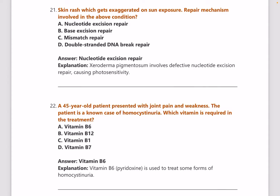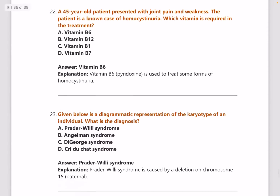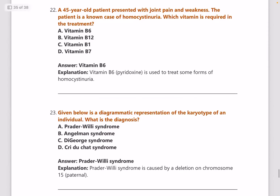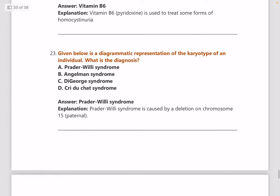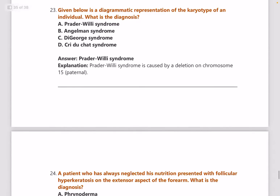Next: skin rash which gets exaggerated on sun exposure — the repair mechanism involved is nucleotide excision repair. Next: a 45-year-old patient with joint pain and weakness, a known case of homocystinuria — which vitamin is required? Answer is vitamin B6.